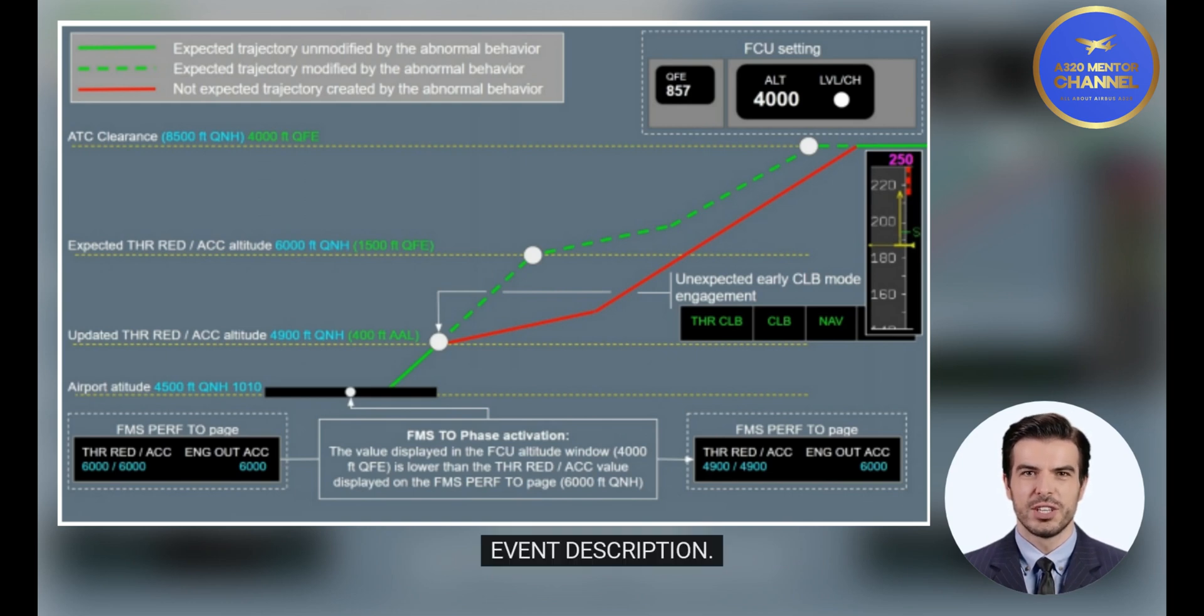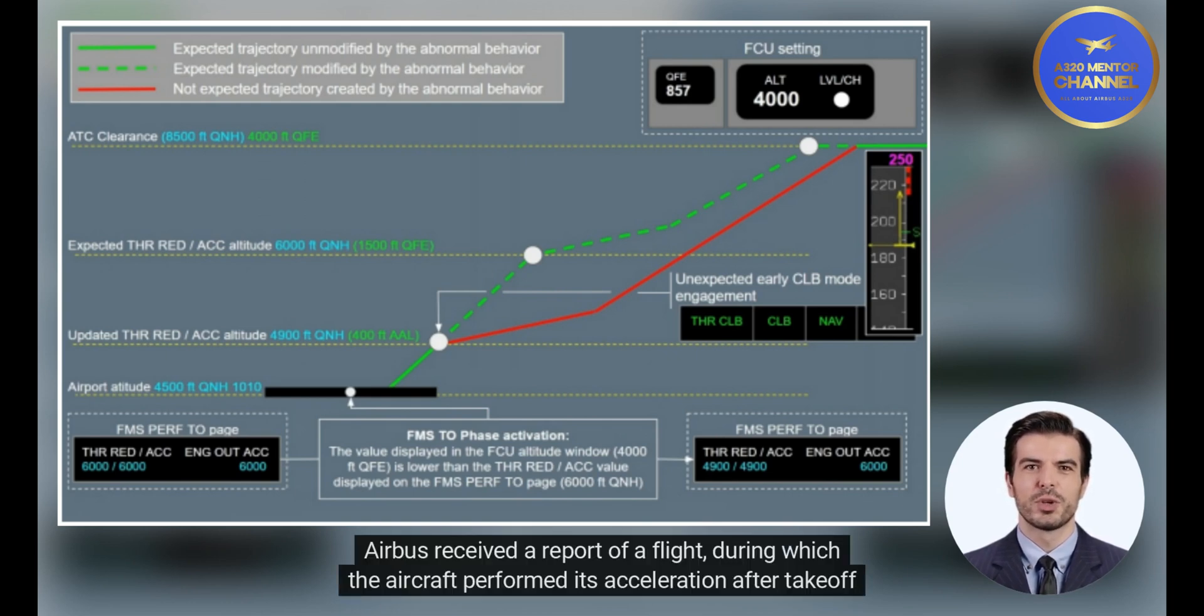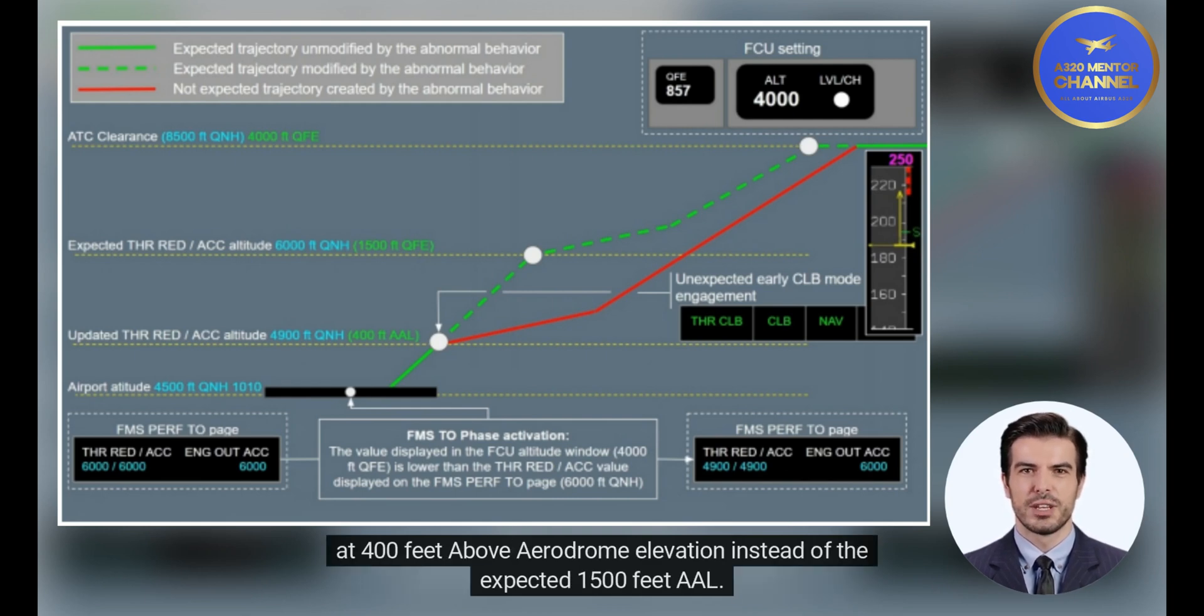Event Description. Airbus received a report of a flight during which the aircraft performed its acceleration after takeoff at 400 feet above aerodrome elevation instead of the expected 1,500 feet AAL.